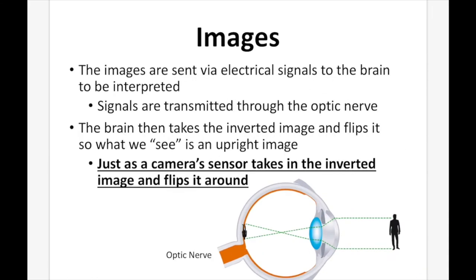The images are sent via electrical signals to the brain to be interpreted. Signals are transmitted through the optic nerve at the back of the eye. The brain takes the inverted image and flips it so we see an upright image, just like a camera sensor takes the inverted image and flips it around.